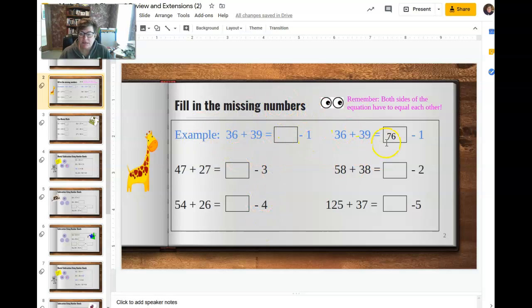Okay, you guys, I want to just take a look at this first slide here. I put this little reminder: both sides of the equation have to equal each other. So if we mentally add 36 plus 39, we get the answer of 75.